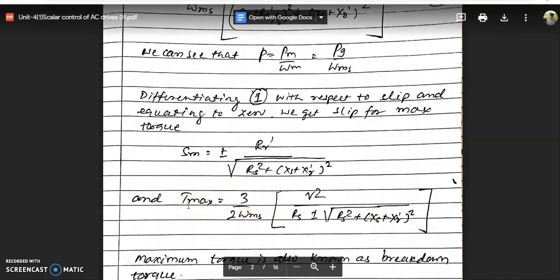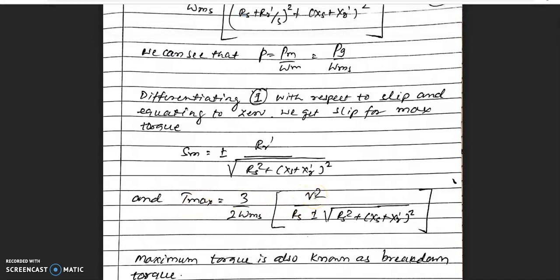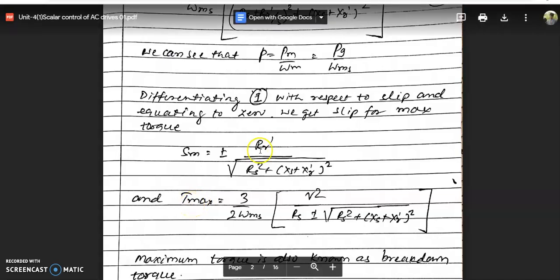At that point you get maximum value of torque. Maximum torque depends on three items: supply voltage and the values of Xs and Xr. Rs is there but it is very small and generally we can neglect it for practical purposes.